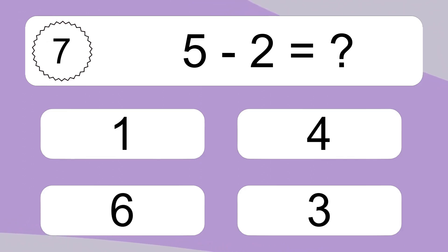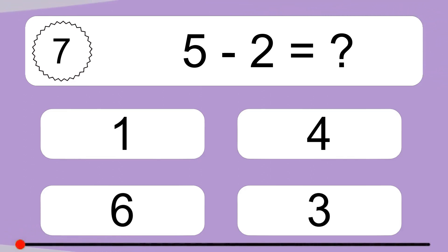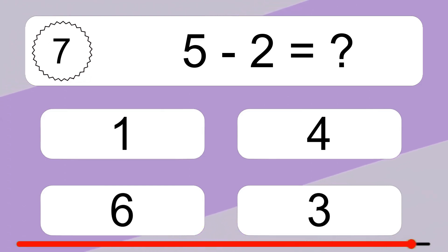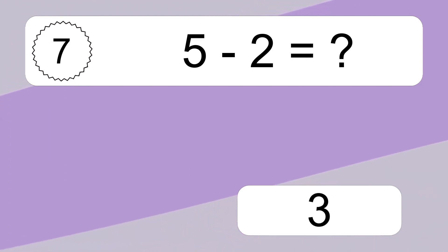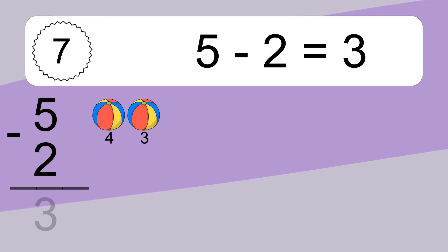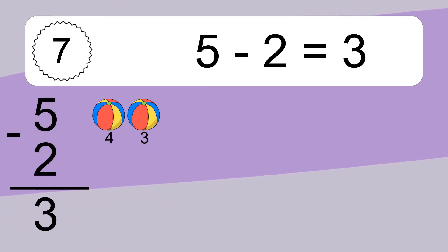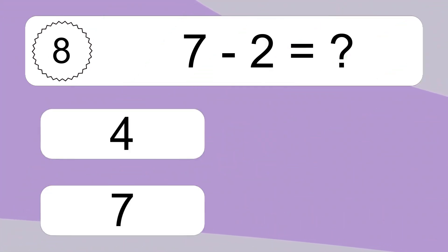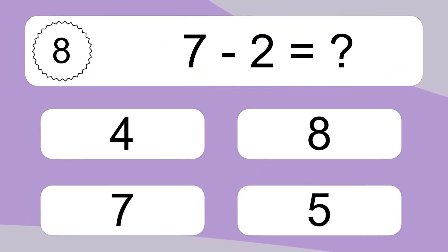16 minus 5 minus 2 equals 3. Let's count it: 4, 3. 7 minus 2 equals what?